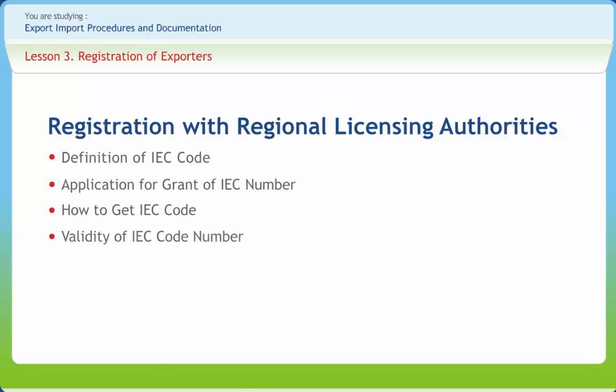An IEC number allotted to an applicant shall be valid for all its branches, divisions, units or factories as indicated in the IEC number. When an IEC number is lost or misplaced, the issuing authority may consider requests for grant of a duplicate copy of the IEC number if accompanied by an affidavit. If an IEC holder does not wish to operate the allotted IEC number, he may surrender the same by informing the issuing authority.